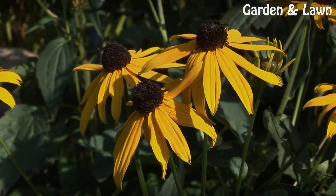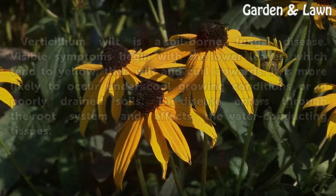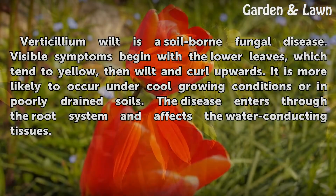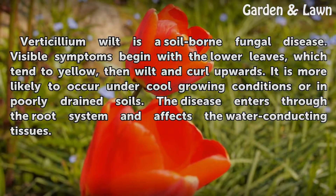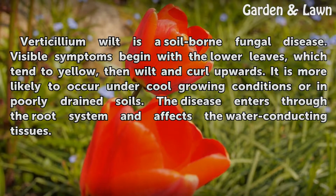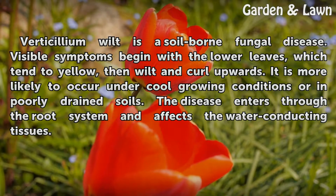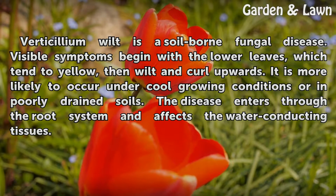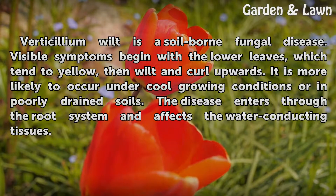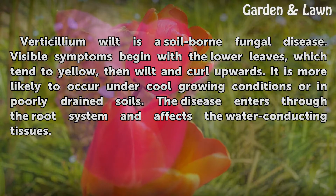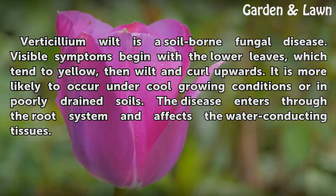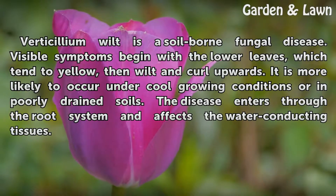Verticillium wilt is a soil-borne fungal disease. Visible symptoms begin with the lower leaves, which tend to yellow, then wilt and curl upwards. It is more likely to occur under cool growing conditions or in poorly drained soils. The disease enters through the root system and affects the water-conducting tissues.